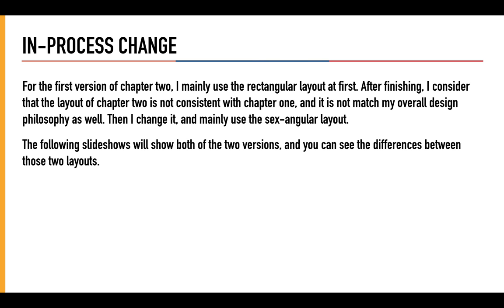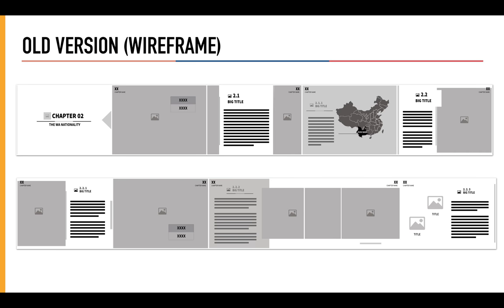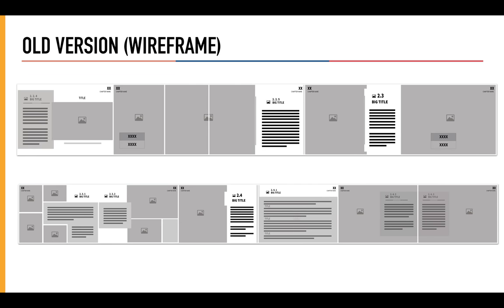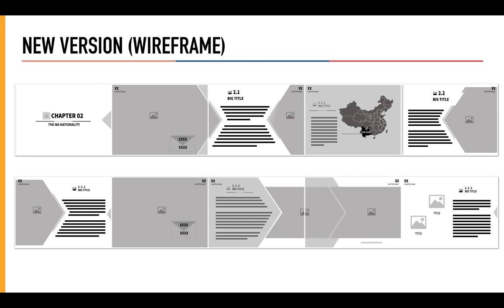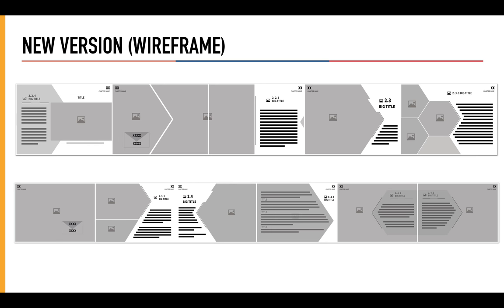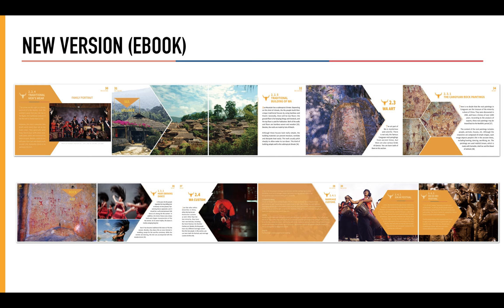In the process, I also made some changes to the ebook. This is the first version of chapter 2, where I mainly used the rectangular layout. However, after finishing, I considered that the layout of chapter 2 was not consistent with chapter 1, and it did not match my overall design philosophy. So I changed it. This is the new version, and you can see that I mainly use the sextangular layout. By comparison, you can see the differences.